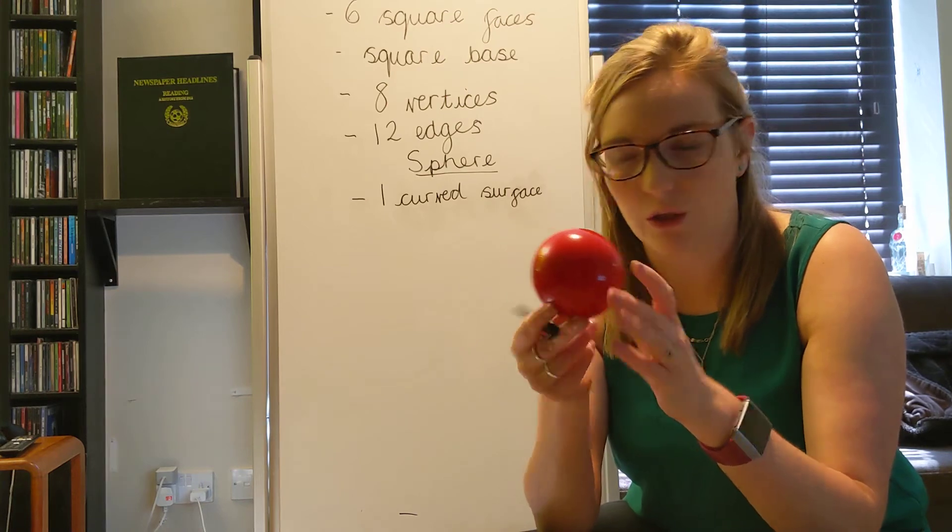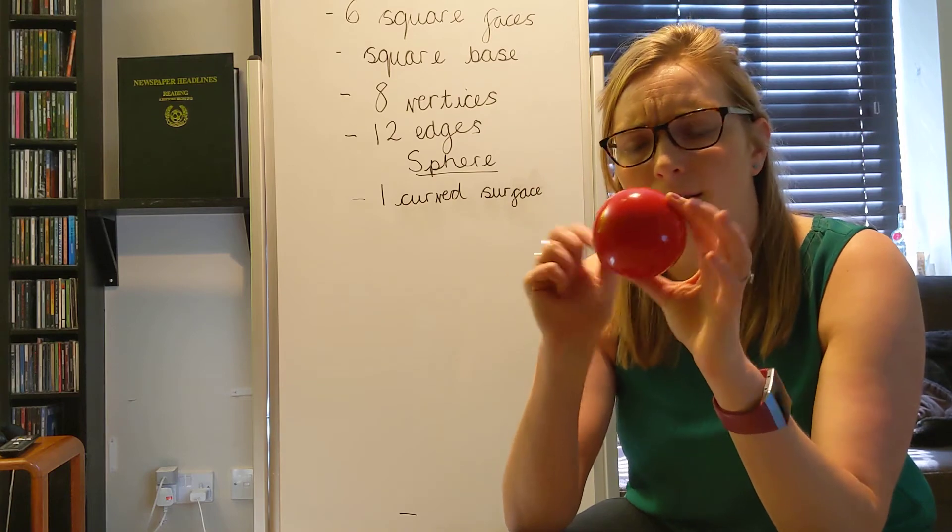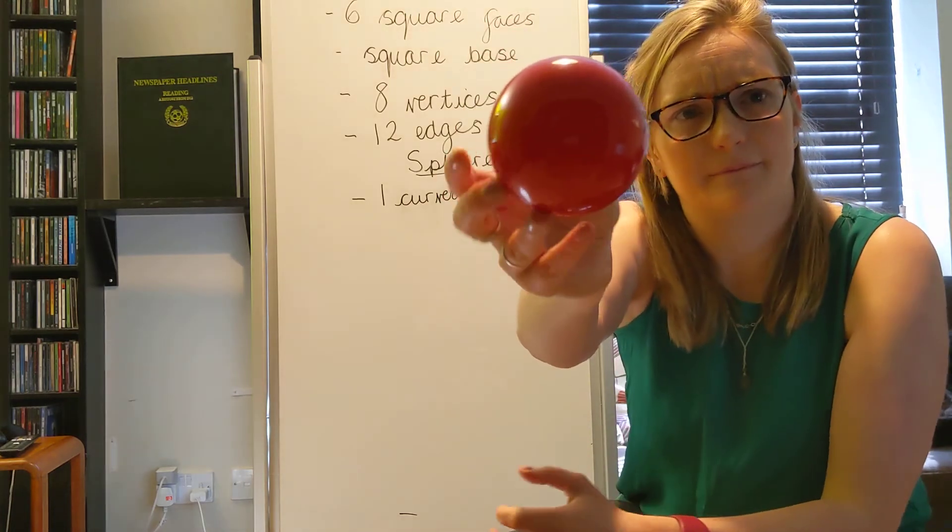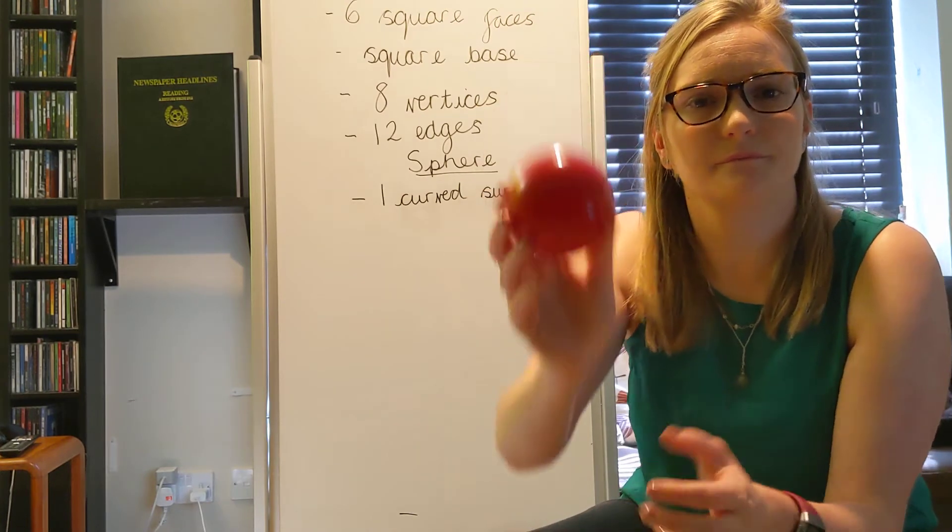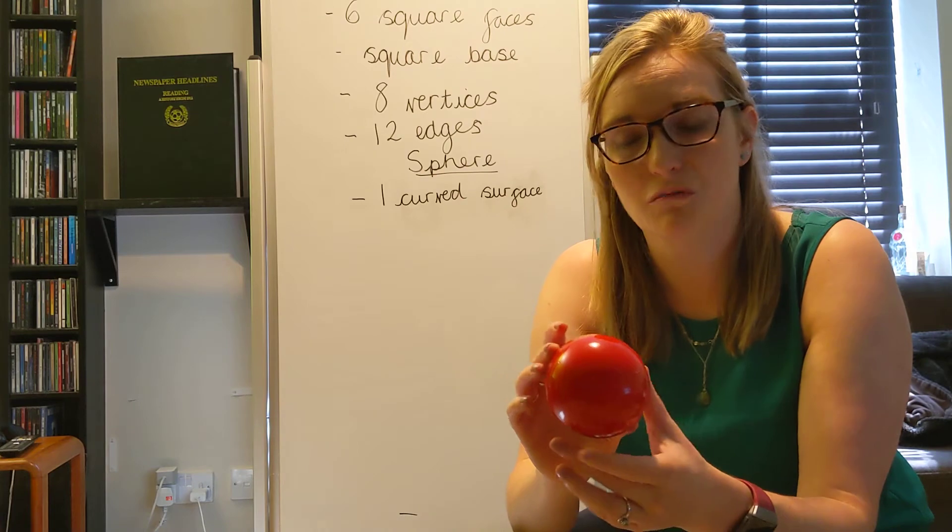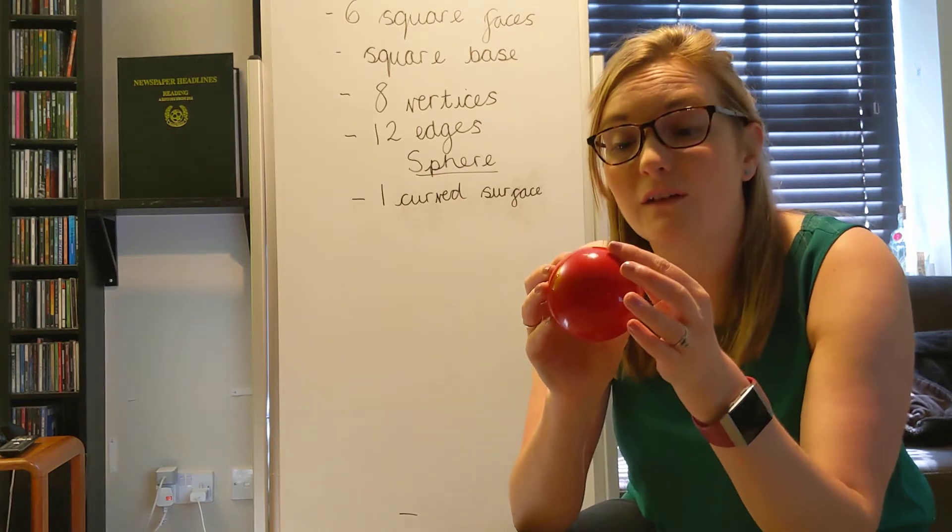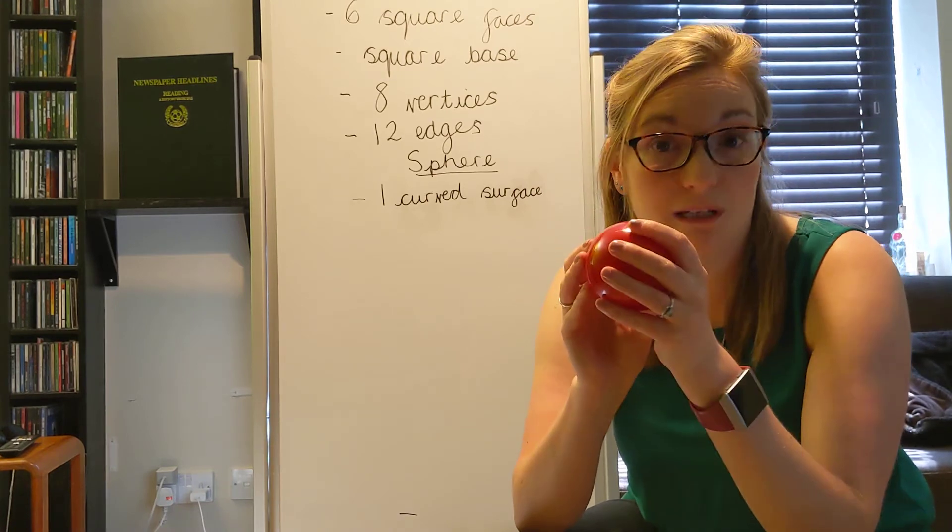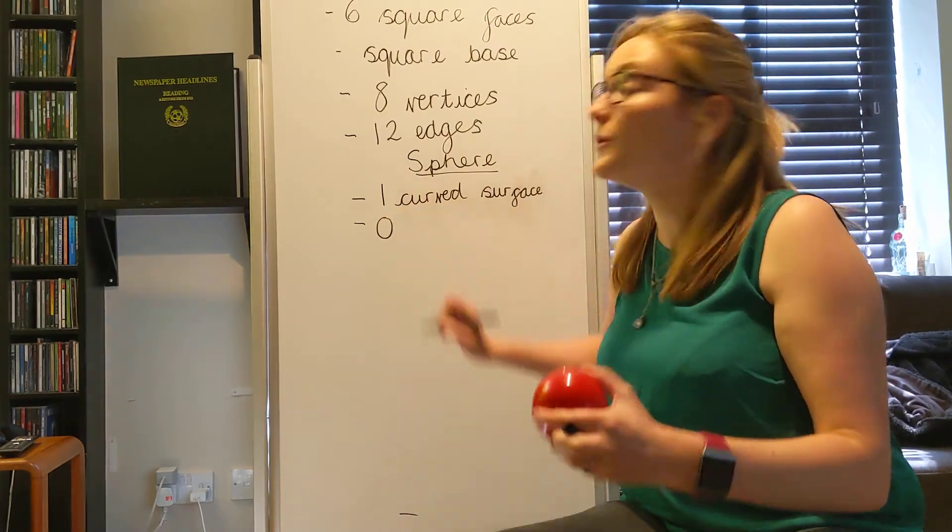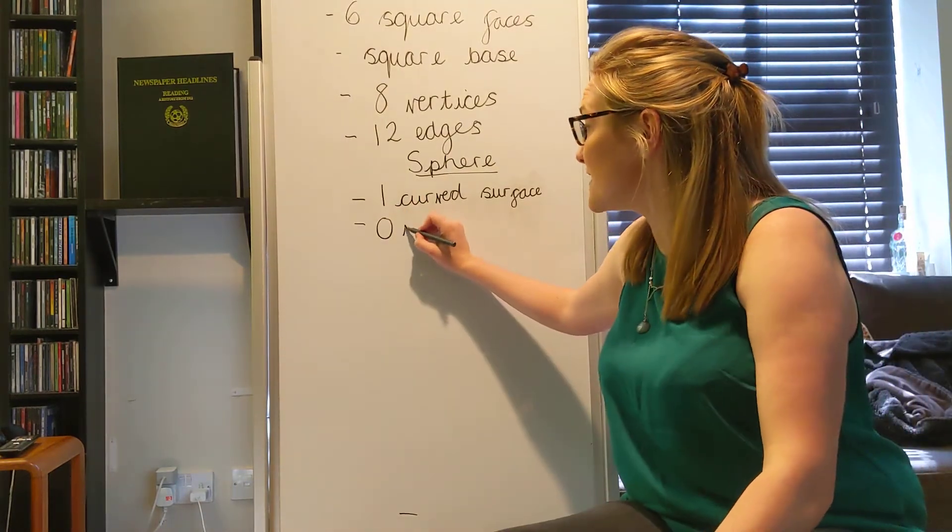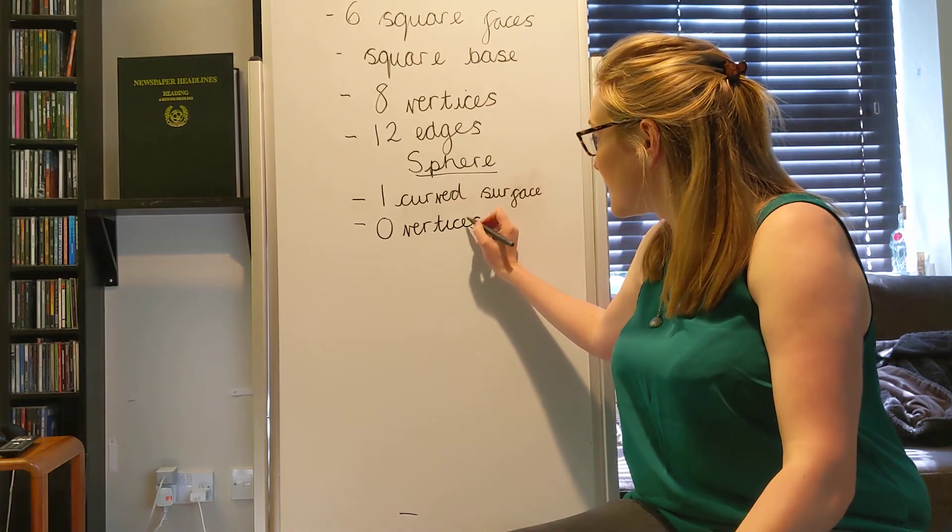I'm having a look now. And when we were talking about the cube, we were able to count some vertices. Have a look at that. Can you see any vertices? No. Nor me. Because there's only one surface, there's no other surfaces to join together to make the pointy bit. So we can say that there are no or zero vertices. Zero vertices.